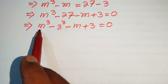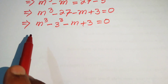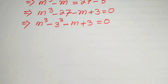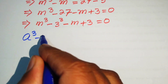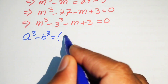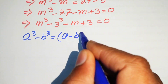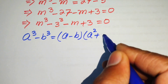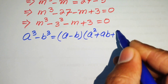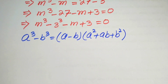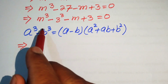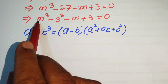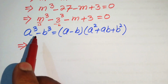We see that we have m cubed minus 3 cubed, so now we apply the cubic formula. According to this formula: a cubed minus b cubed equals to (a minus b) times (a squared plus ab plus b squared). We apply this formula to the above term, where our a equals to m and our b equals to 3.